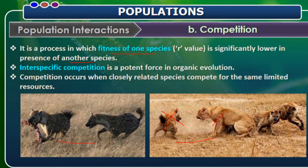Competition is of different types: inter-specific competition and intra-specific competition. Inter-specific competition is the competition existing between individuals of two different species. Whoever is the fittest will survive in that particular habitat. Competition usually occurs between closely related species because they share the same limited natural resources.